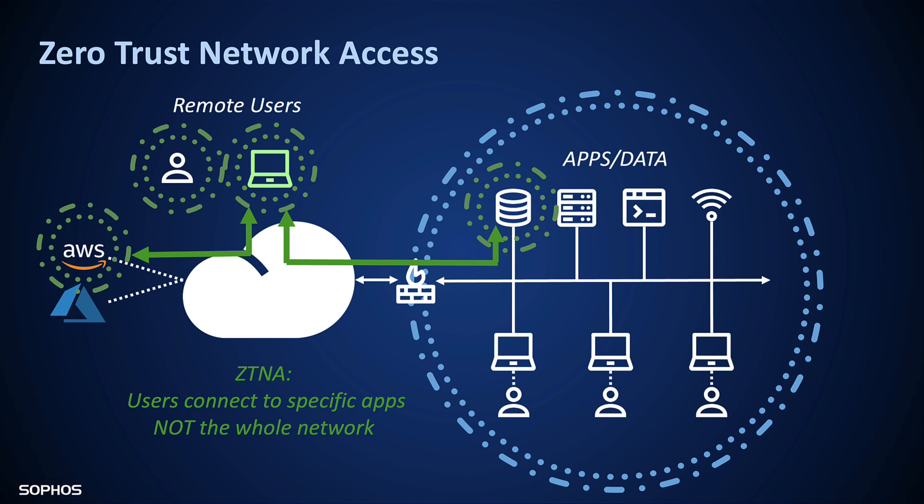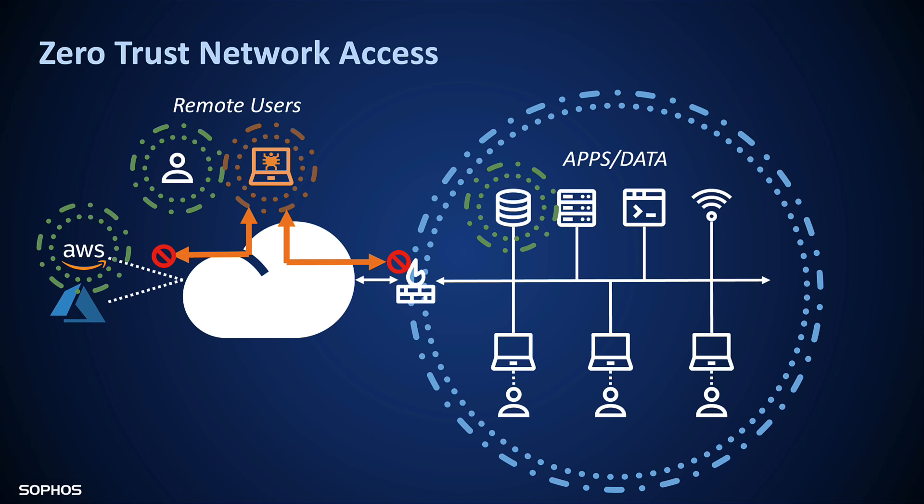With Zero Trust Network Access, remote workers are no longer implicitly trusted. They and their device have to earn trust constantly. Another fundamental difference is that ZTNA only connects a user to a very specific application or system, not the whole network. In this example, you can see a remote user can access an application in AWS and another on the corporate network, but nothing else. If a device becomes compromised by an attack, policy can prevent it from connecting to corporate networked applications and data, effectively preventing lateral movement and attacks from getting a foothold on the network.